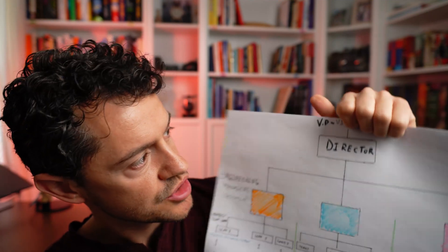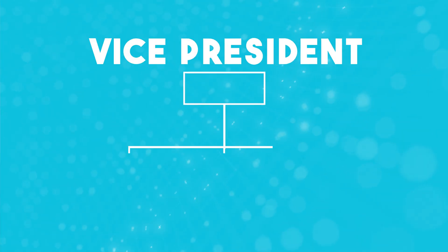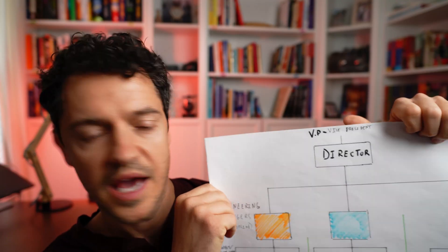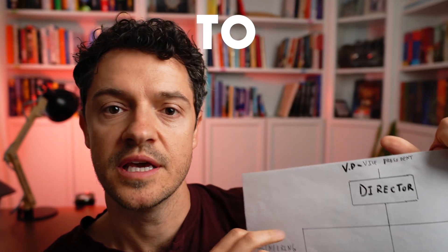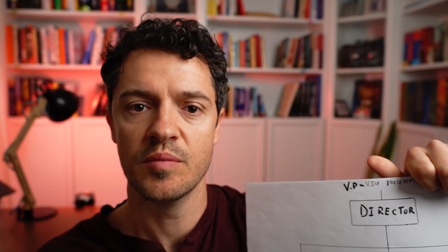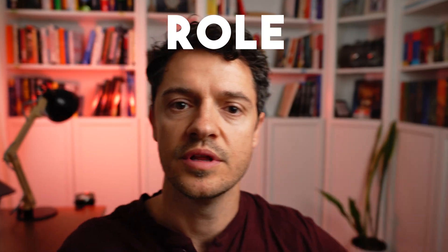Starting from a top-down approach, at the very top we have vice president, and then we have the director. This VP might only have three or four directors reporting directly to them — or they might have 10 or 15 depending on the organization, in which case they would just have more vice presidents. The director role is crucial to the company; every single one of these roles is crucial from the very top to the bottom.